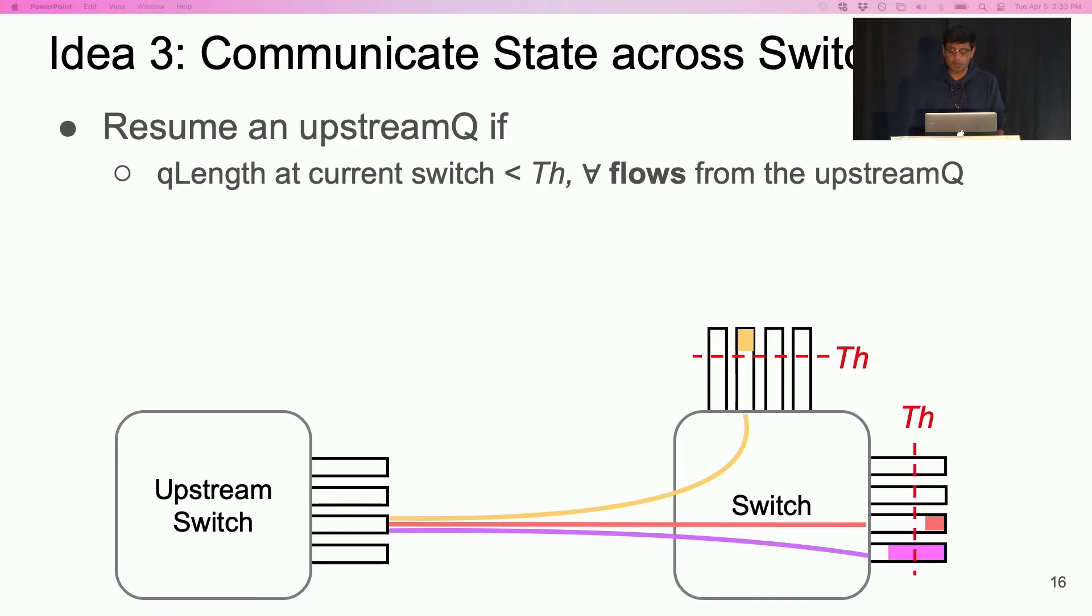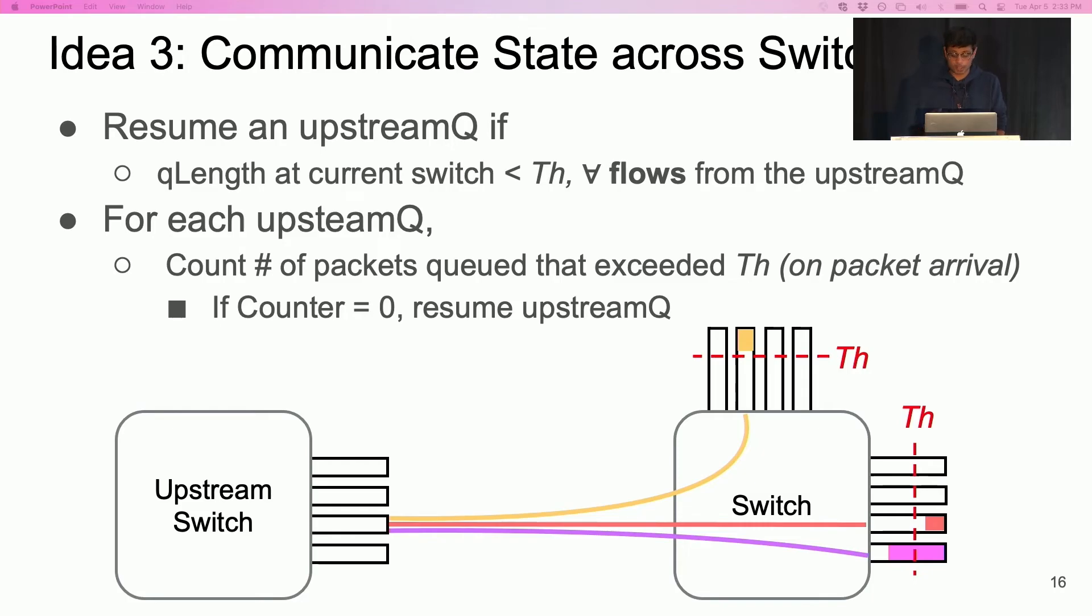To control buffers, a BFC switch only resumes an upstream queue when the queue length for all its flows falls below the pause threshold at the switch. BFC uses a simple counter to resume the upstream queue. For each upstream queue, the switch tracks the number of queued packets in the switch that exceeded the pause threshold on arrival. The switch resumes an upstream queue when this corresponding counter goes to zero. Communicating state across switches allows for a simple mechanism to pause and resume flows, which requires a limited amount of state.